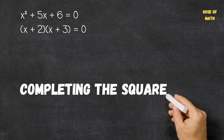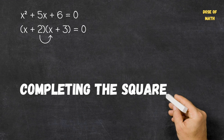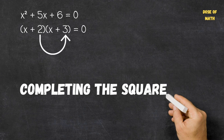The reason that works is because the first terms in each factor will multiply to give us our x squared term in the original expression. Then the inside terms multiply together to give us 2x, and the outside terms multiply together to give us 3x. So 2x plus 3x is 5x, and finally the last numeric terms multiply to give us 6. So this is how we multiply our brackets.